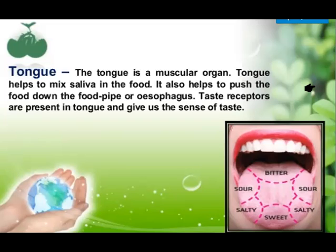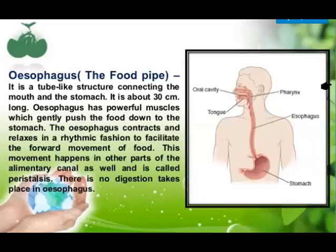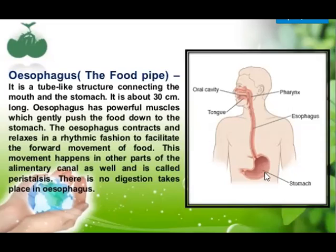After the buccal cavity, the next organ in the digestive system is the oesophagus. It is a muscular pipe which joins the mouth with the stomach. In the next class we will study its function in detail — how it transfers food from the mouth to the stomach, and how food moves downward through it.